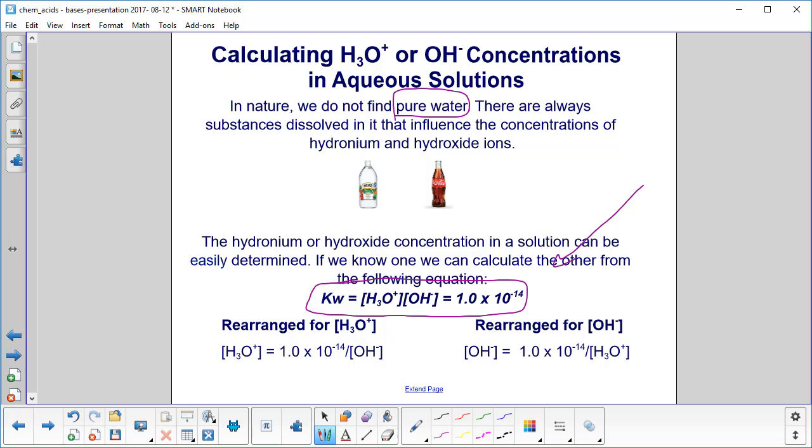And if we rearrange that for the concentration of the hydronium, we just divide 1 times 10 to the minus 14th by the concentration of the hydroxide ion.